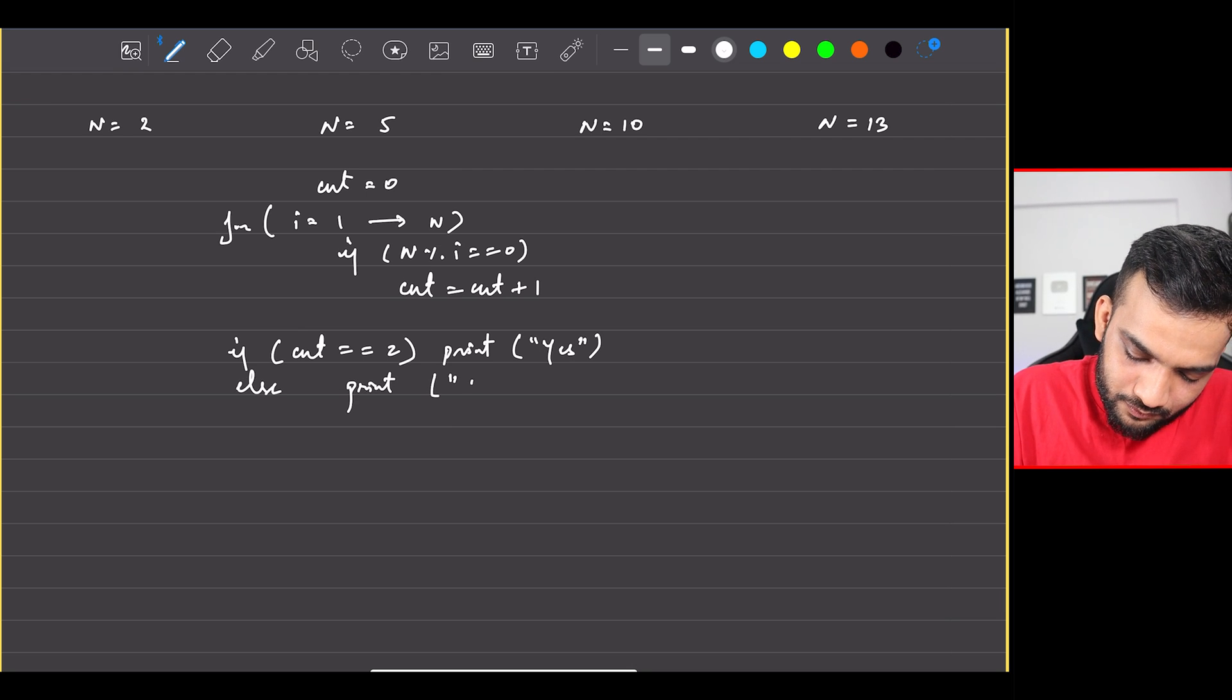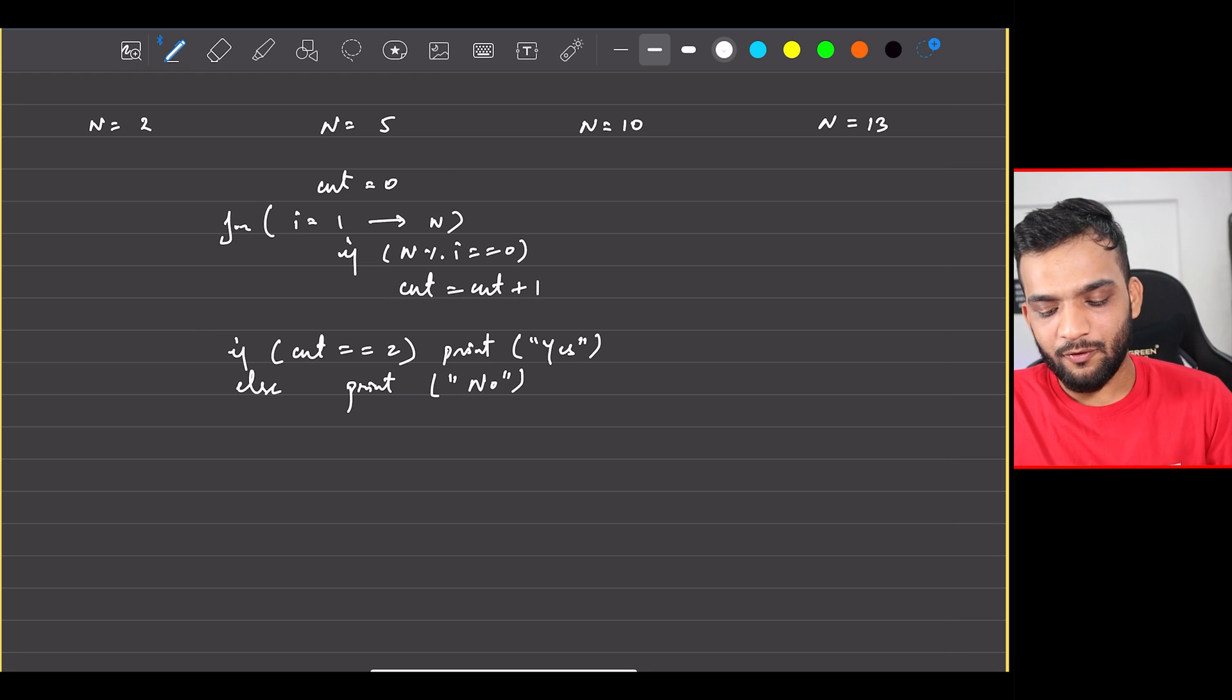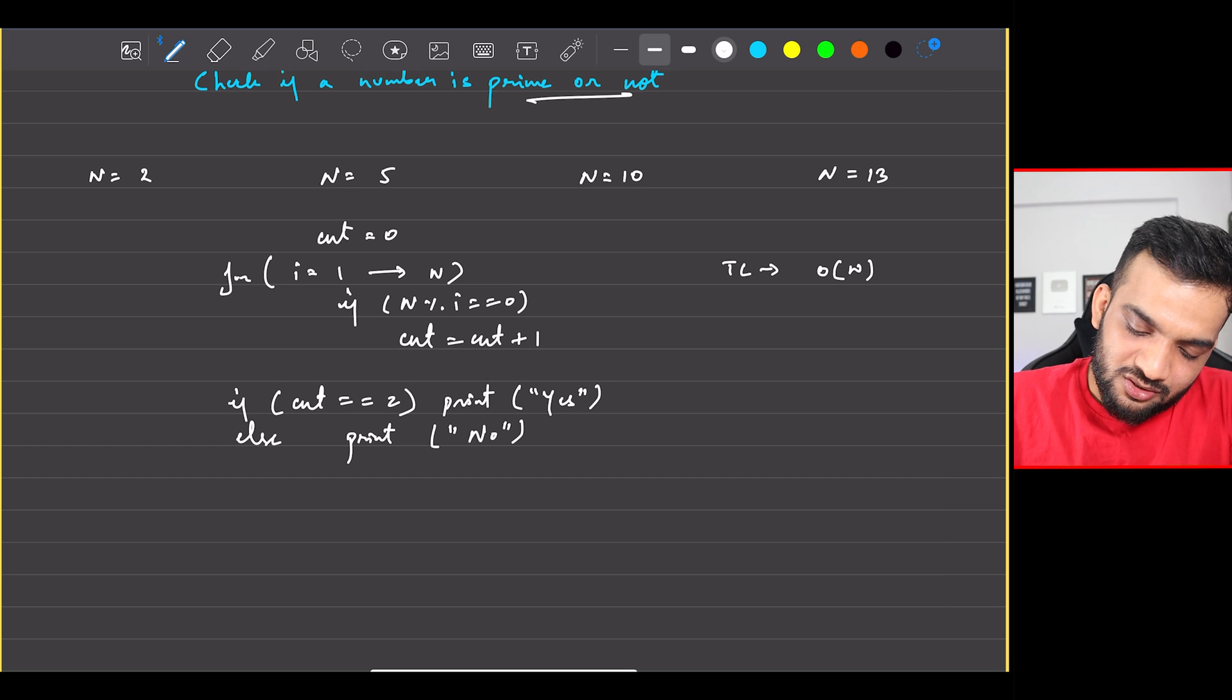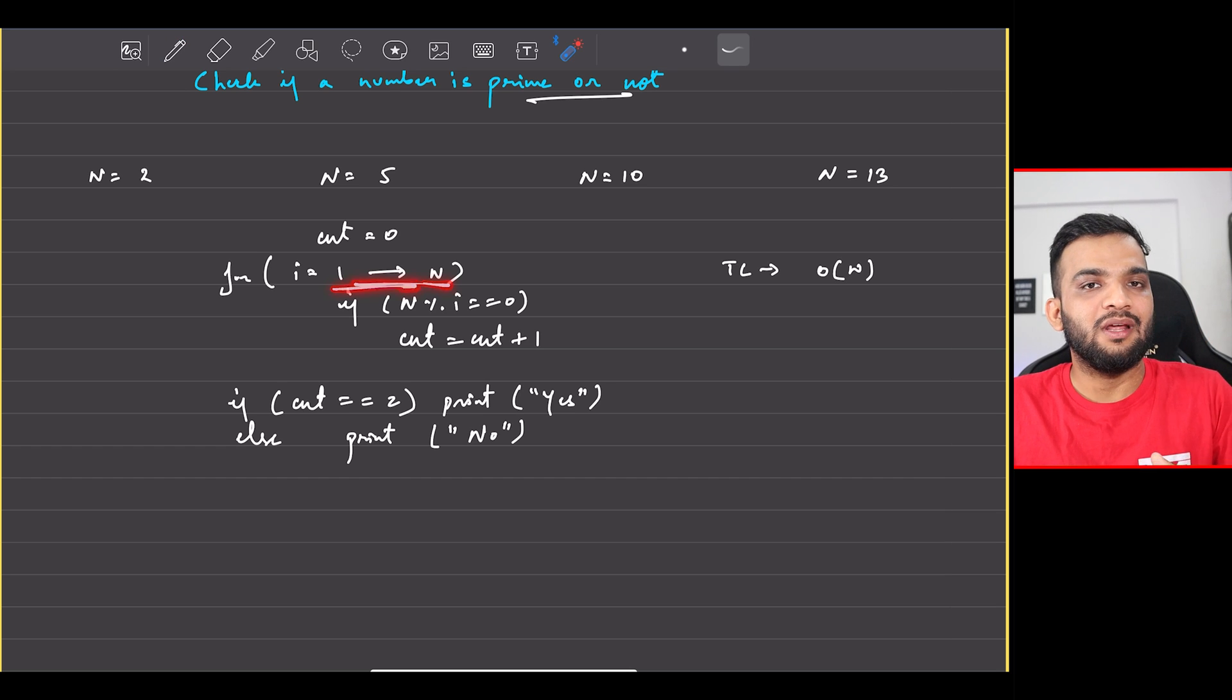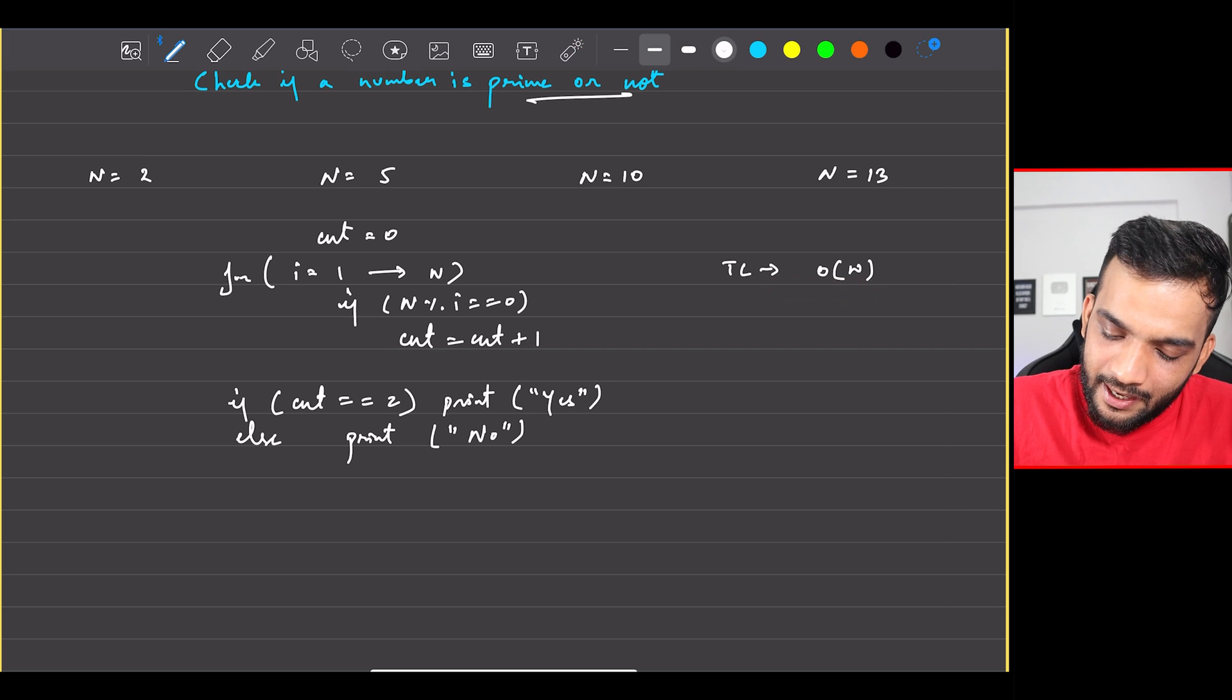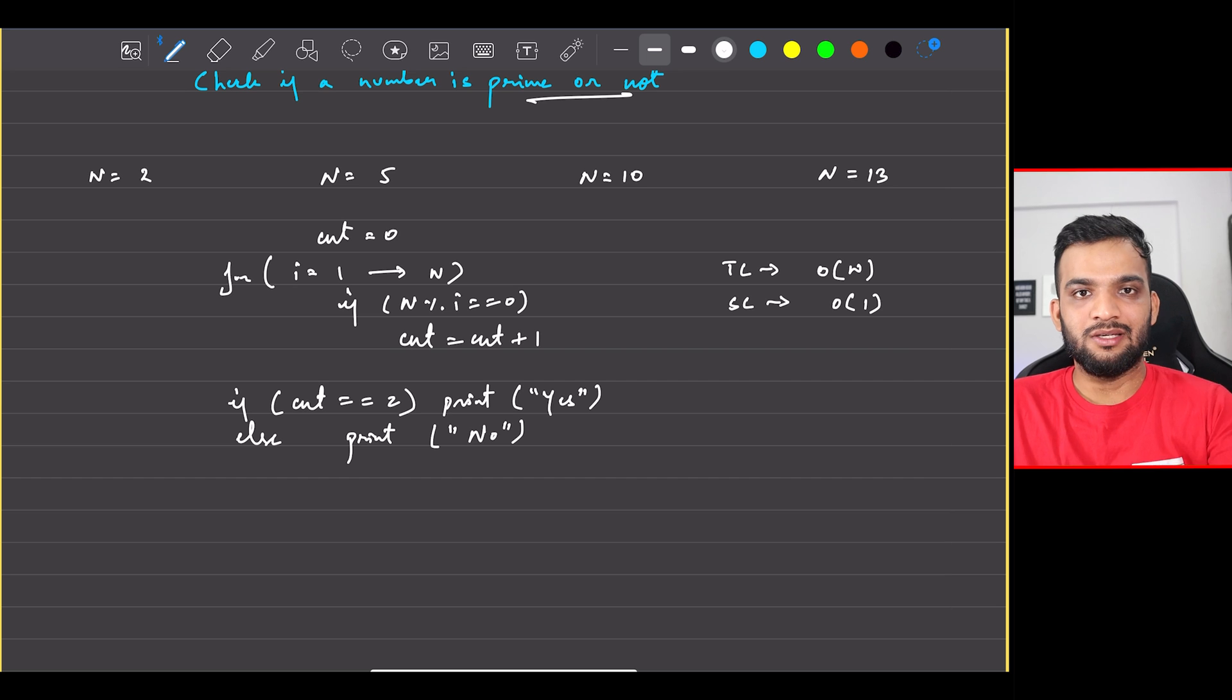What will be the time complexity? O(n), because the loop is running for n iterations. Space complexity? O(1). Obviously, the interviewer might not be happy - in a generic way, this is not the most optimal solution. So can we optimize this?